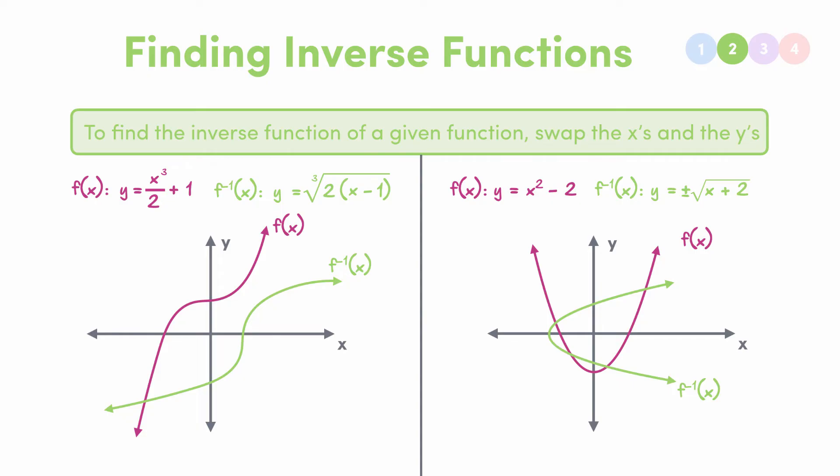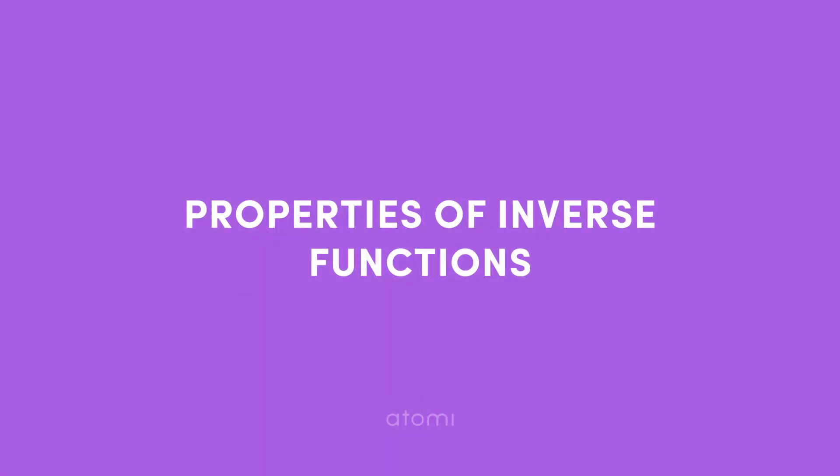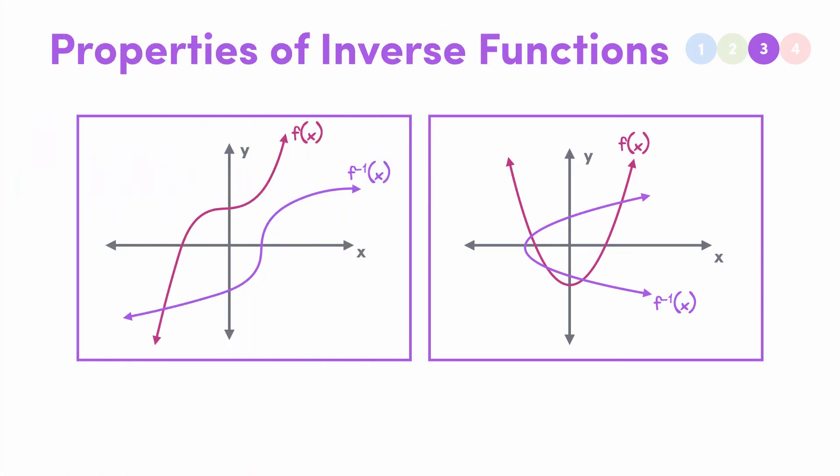The last thing we need to look at in this video is the properties of inverse functions, because you can see in our two graphs, there's clearly something going on. The inverse functions kind of have the same shape as the original, there's a bit of a mirror effect going on, something like a reflection. And if we add in the line y equals x, this becomes clear.